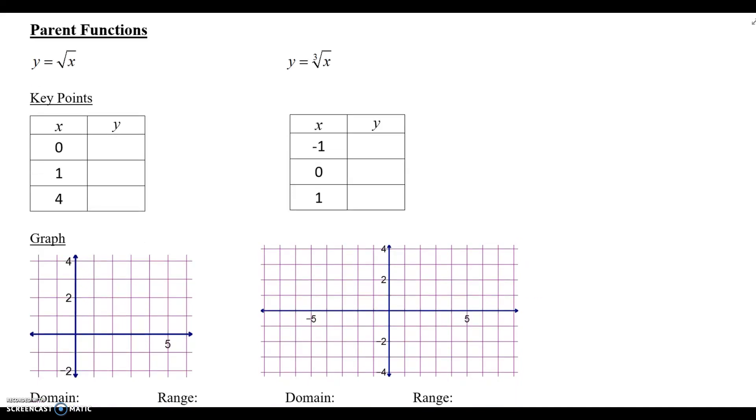So our two parent functions are going to be y equals the square root of x and y equals the cube root of x. I want you to just take a note of our x values. These are going to be the original parent key points and they're this way because they're the first either 3 perfect squares or cubes.